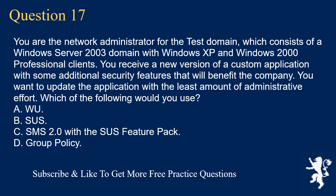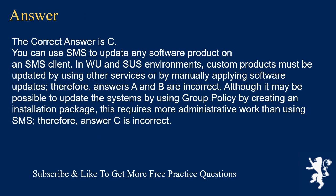Question 17. You are the network administrator for the test domain, which consists of a Windows Server 2003 domain with Windows XP and Windows 2000 Professional clients. You receive a new version of a custom application with some additional security features that will benefit the company. You want to update the application with the least amount of administrative effort. Which of the following would you use? A. WUS. B. V-SUS. C. SMS 2.0 with the SUS feature pack. D. Group policy. The correct answer is C. You can use SMS to update any software product on an SMS client. In WUS and SUS environments, custom products must be updated by using other services or by manually applying software updates. Therefore, answers A and B are incorrect. Although it may be possible to update the systems by using group policy by creating an installation package, this requires more administrative work than using SMS. Therefore, answer D is incorrect.